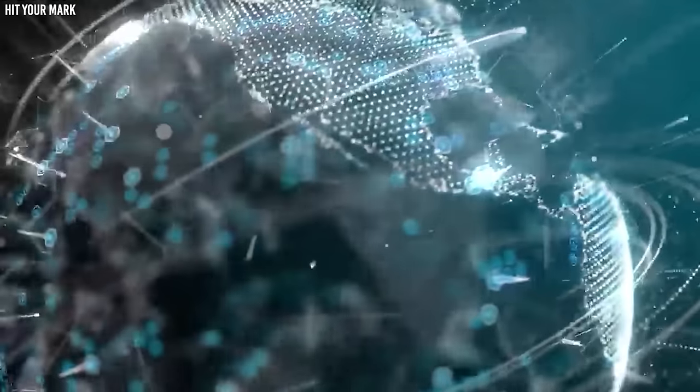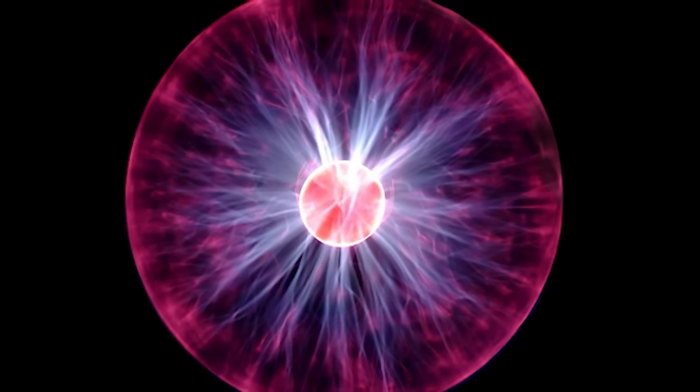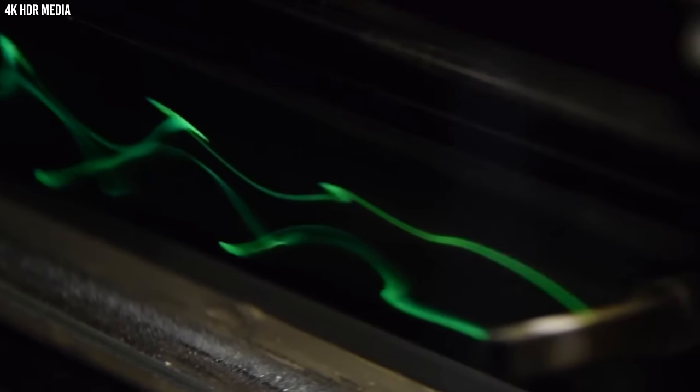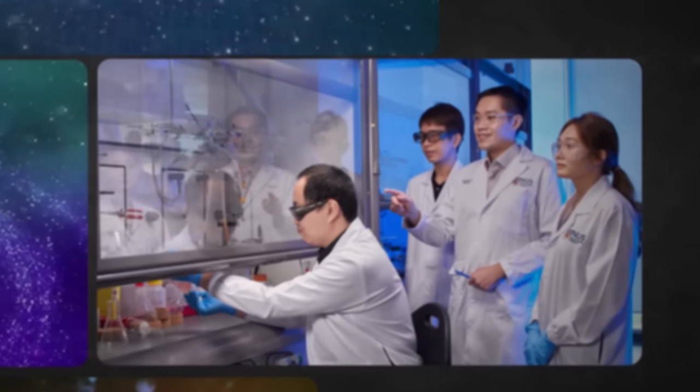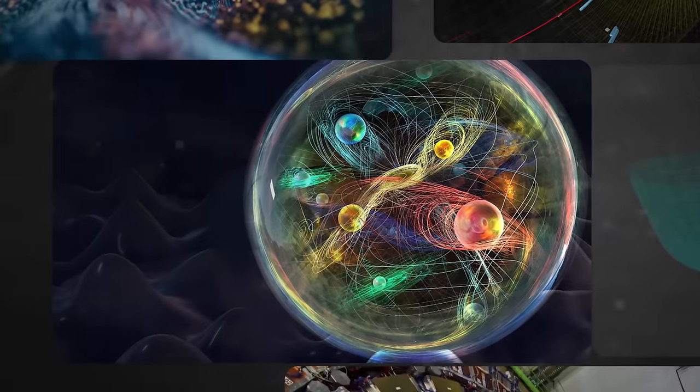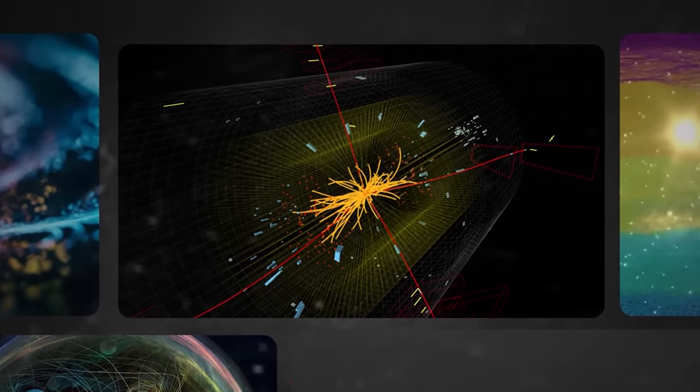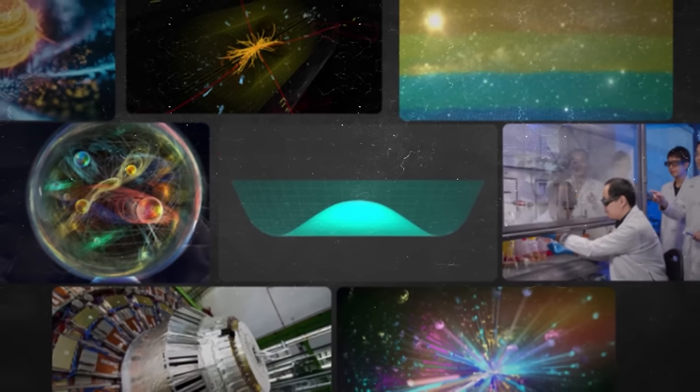However, in the case of other particles like electrons, things aren't so smooth. These particles face a lot more resistance from the Higgs field, causing the creation of turbulent waves. Scientists are still not sure why the Higgs field behaves this way. However, it is believed that the Higgs particle and the Higgs field are both fundamental keys to truly understanding the origin of mass in the universe.